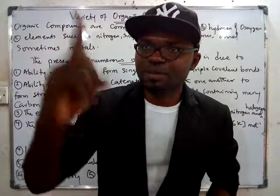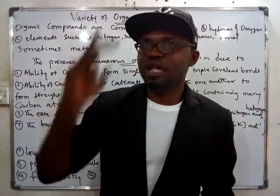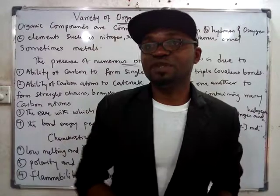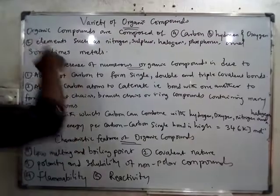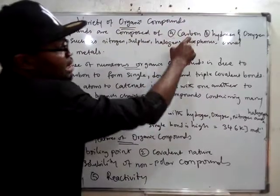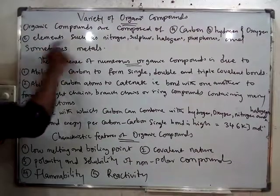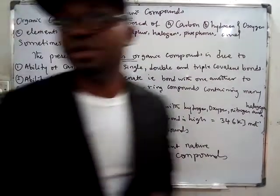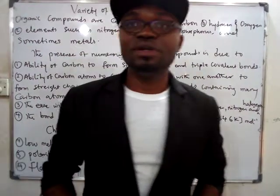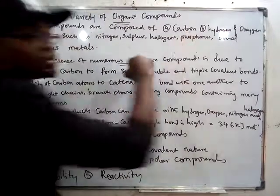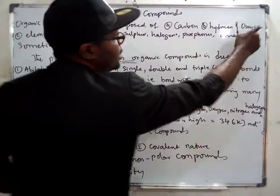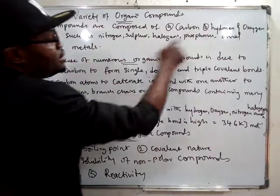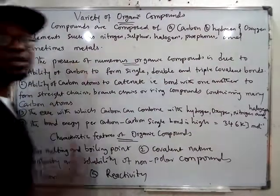First of all, organic compounds are compounds composed of: number one, carbon; number two, hydrogen and oxygen; number three, nitrogen, sulfur, halogens, and phosphorus; and in some rare cases, metals. That's how you identify an organic compound — it must contain carbon, in most cases hydrogen and oxygen, sometimes nitrogen, sulfur, halogens, and phosphorus, and in rare cases metals.